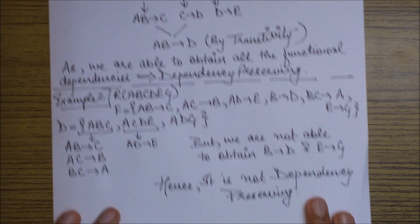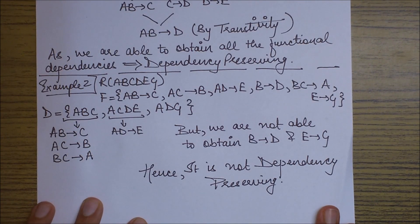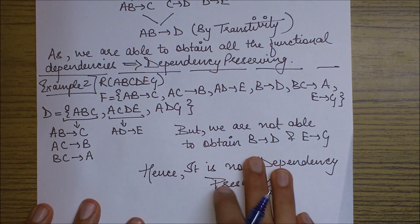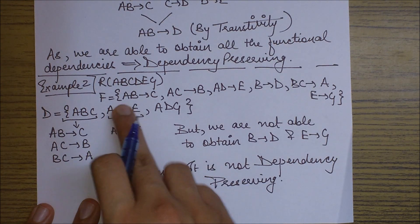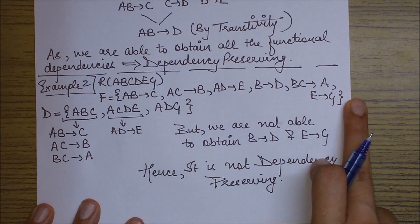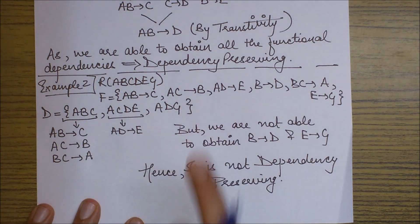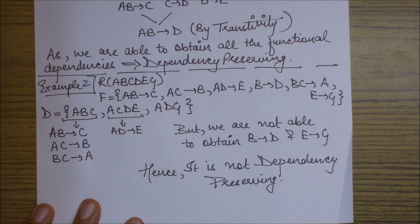The next example has relational schema R with attributes A, B, C, D, E, G. In this relational schema we have a larger functional dependency set and a decomposition set. The procedure is the same.